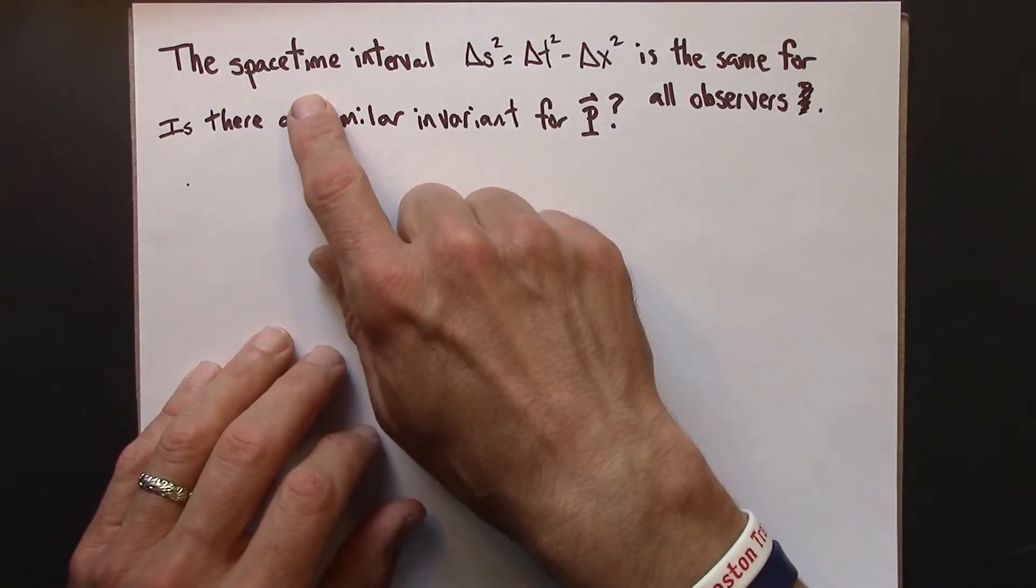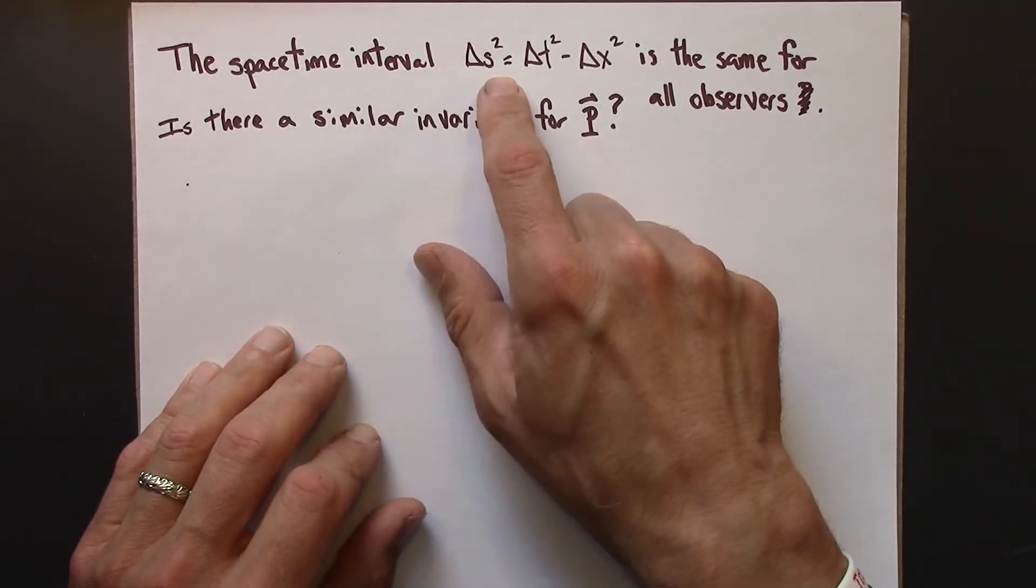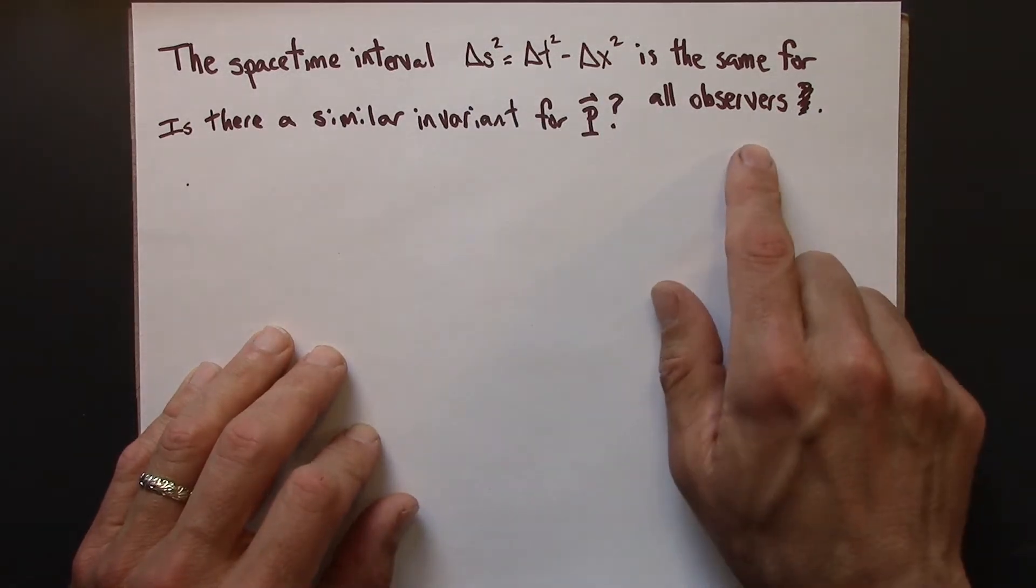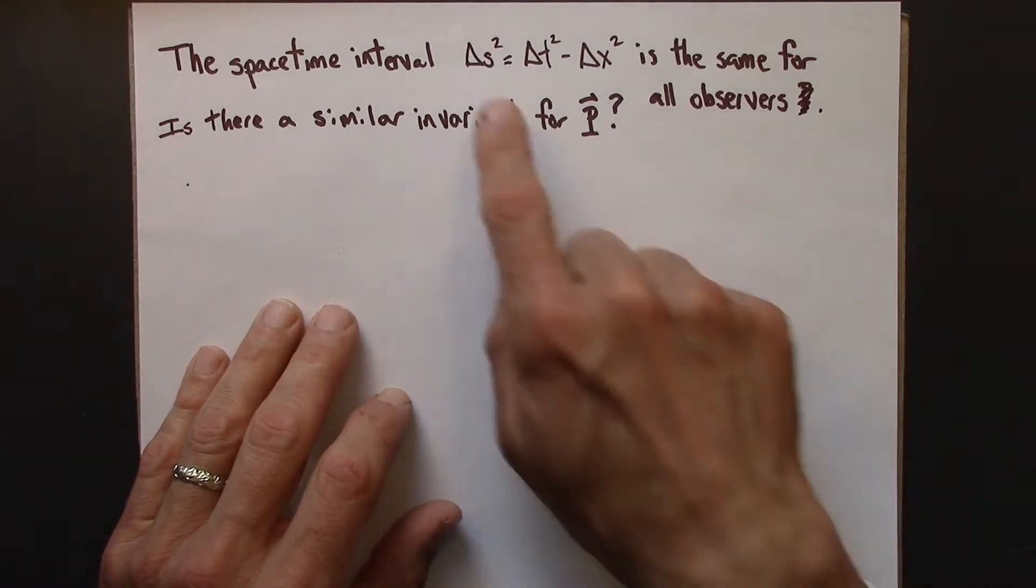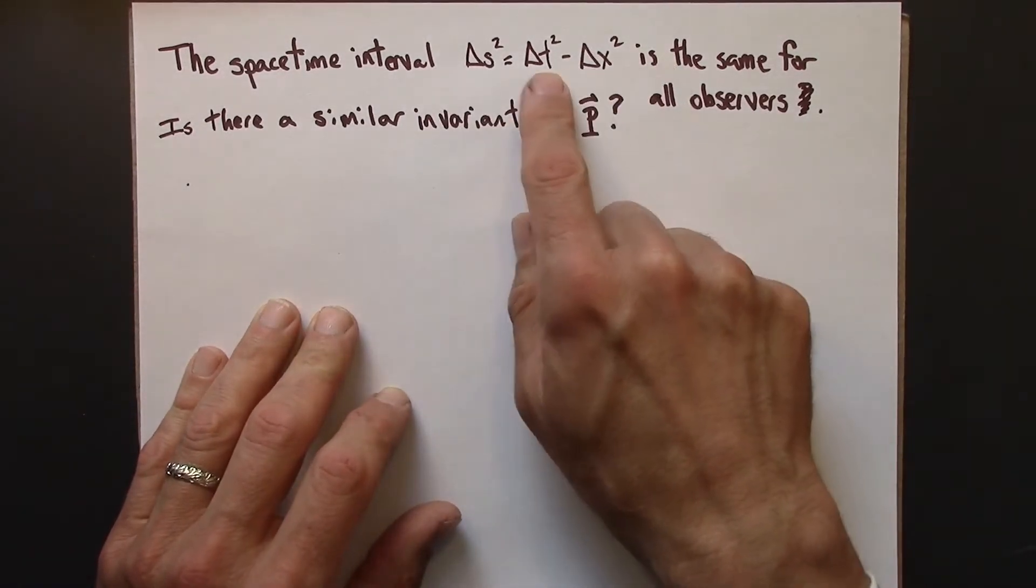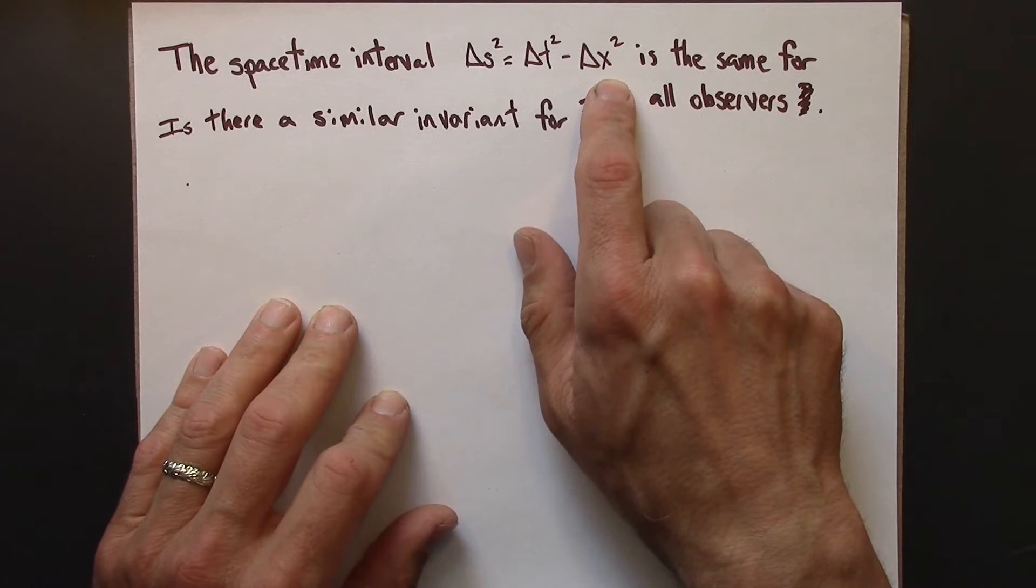So when we think about space-time coordinates, we know that there's a certain quantity that's the same for all observers. It's an invariant. It doesn't change from reference frame to reference frame. And that's the space-time interval.